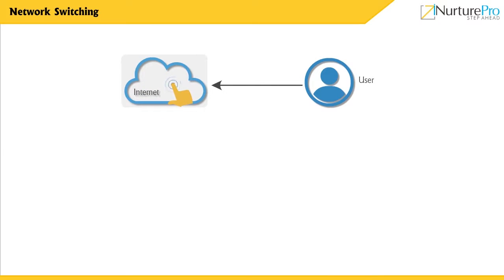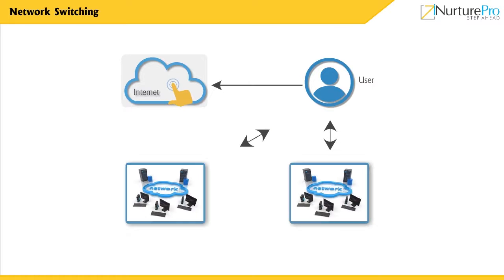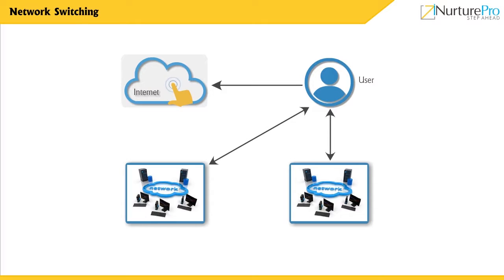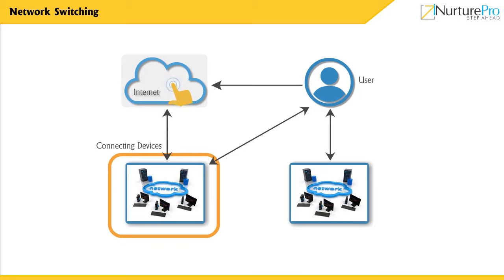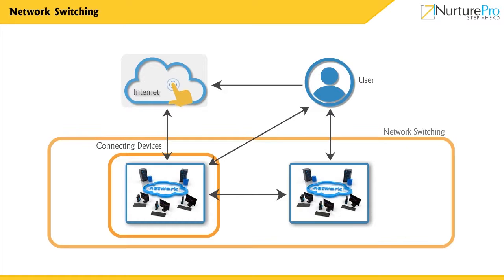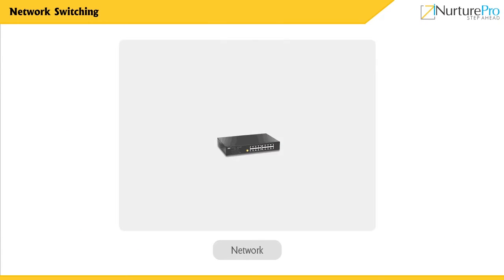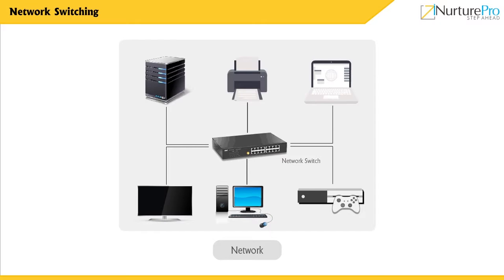At the time of accessing the internet, if the user wants to send or access the data across the internet, the data travels through different connecting devices to the user. This process of moving the data from one computer network to another is known as network switching. The devices which help the network to switch are called switches. Switches provide the temporary connection between two or more devices in the network.